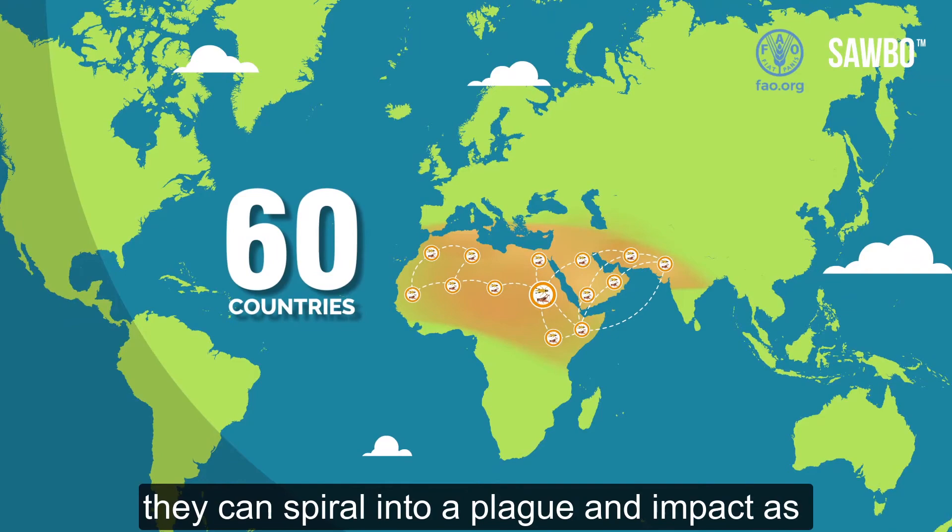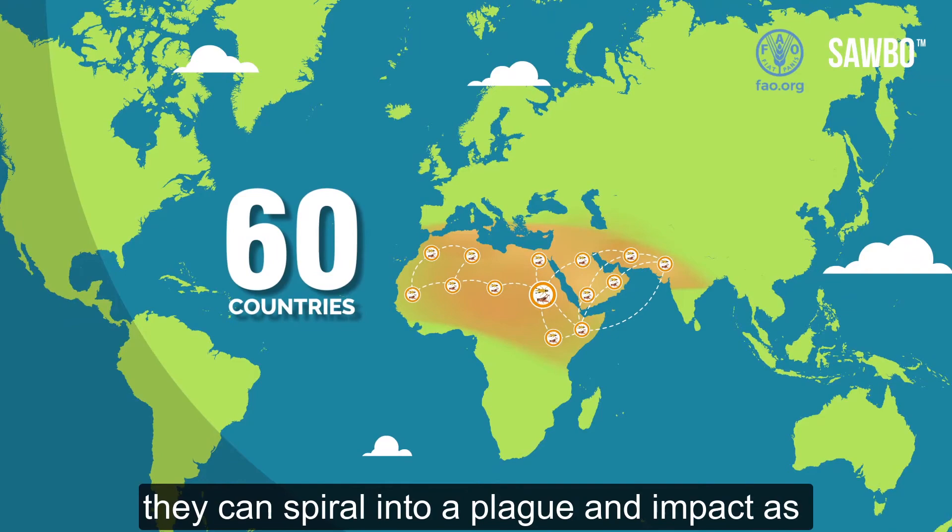If the swarms are not controlled, they can spiral into a plague and impact as many as 60 countries, affecting the livelihoods of 10 percent of the world's population.